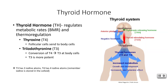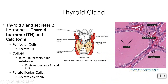T3 and T4 refer to the number of iodine atoms present. T3 has three iodines while T4 has four iodines. The iodine is stored in the colloid, right next door to the follicular cells that secrete the T4, which makes it convenient.